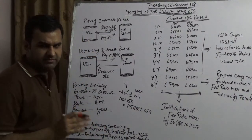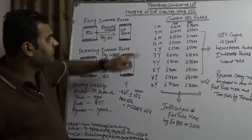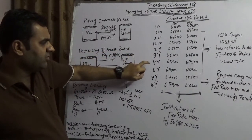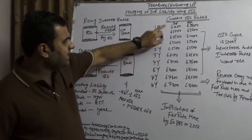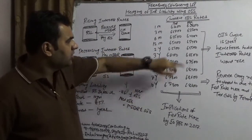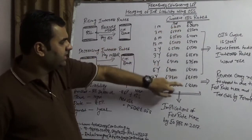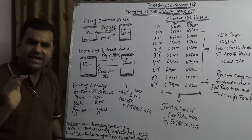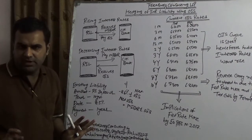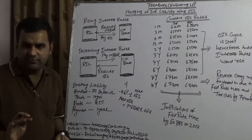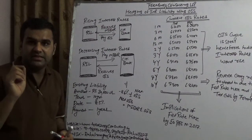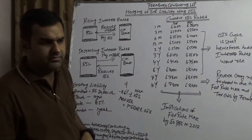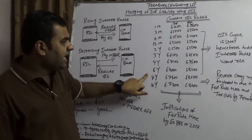Looking at the current rates on screen, tenors range from one month to ten years: one month, three months, six months, twelve months, two year, three year, four year, five year, and so on. One month is 6.22% and ten year is 6.78%. One-month OIS is 6.28% and ten-year is 6.80%. This effectively means the OIS curve is not falling — it is an upward-sloping curve. As of now, the OIS curve is upward, and that is something we sincerely need to understand and appreciate.